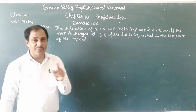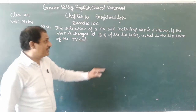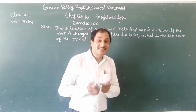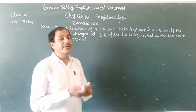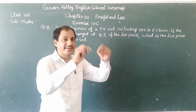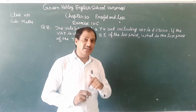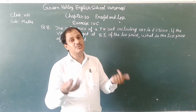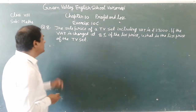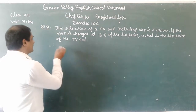Here in this question we are going to find the list price. Rs 27,000 is the selling price including VAT. So the question is asking: what is the list price? Let the list price of the TV set be X.